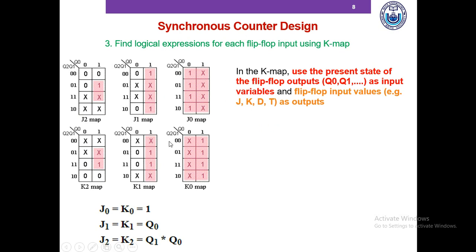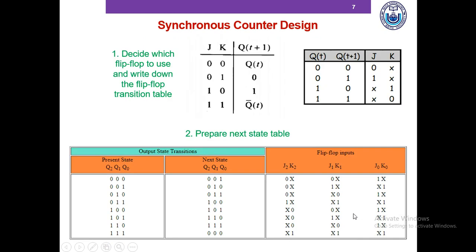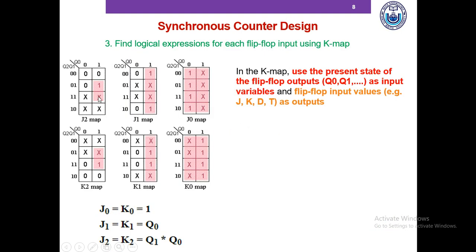When we construct the Karnaugh maps, the input variables are the present state columns Q2, Q1, and Q0, and the outputs are the J and K columns from the next state table. We treat the X entries as don't care conditions in the Karnaugh map, and when we solve these K-maps we get expressions for J2, K2, J1, K1, J0, and K0 with respect to Q2, Q1, and Q0.